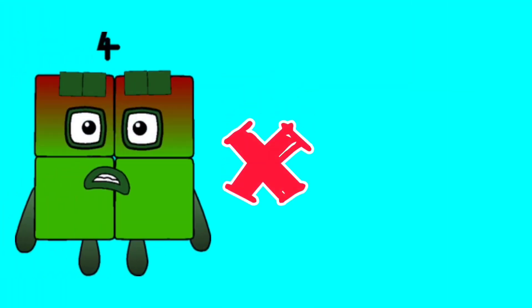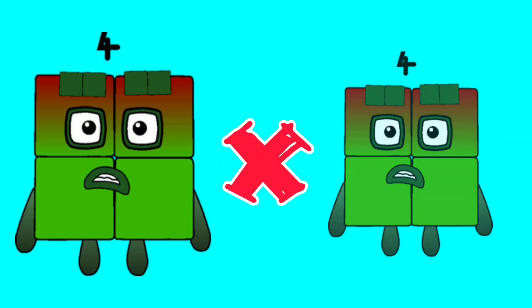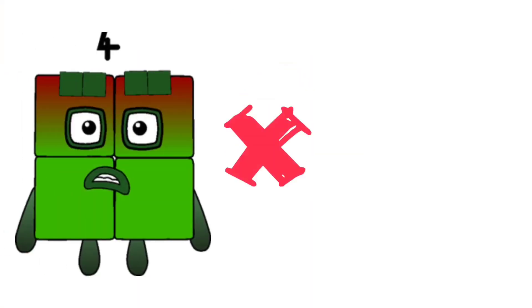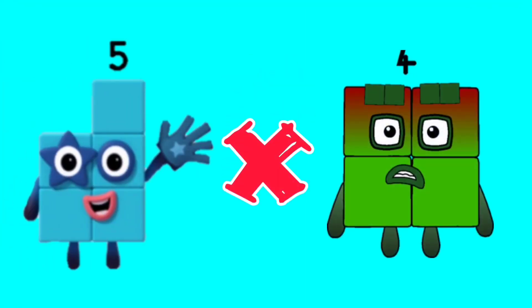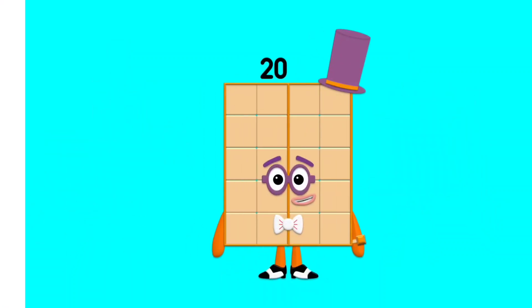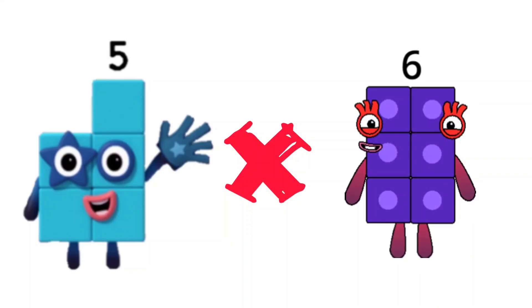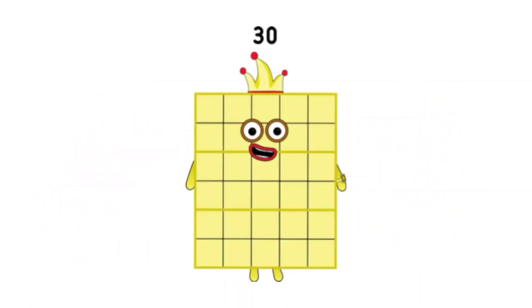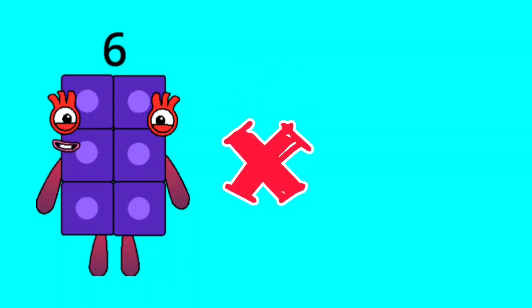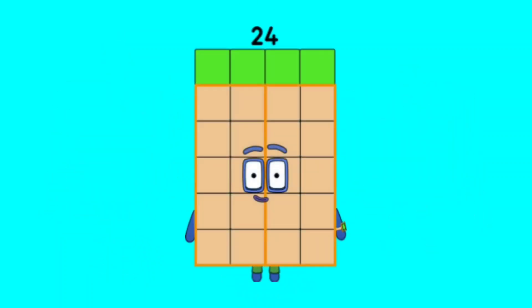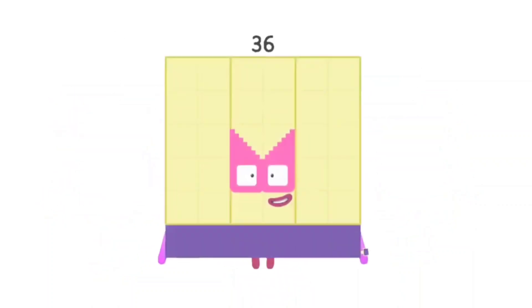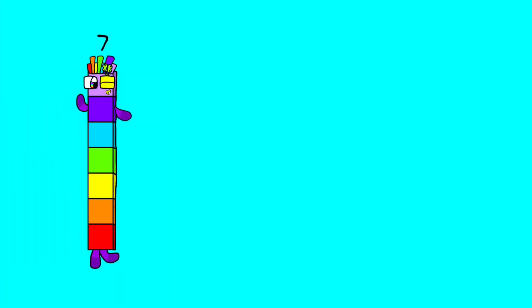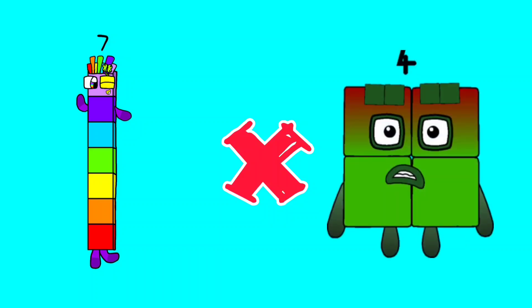4 times 4 is 16. 4 times 6 is 24. 5 times 4 is 20. 5 times 6 is 30. 6 times 4 is 24. 6 times 6 is 46. 7 times 4 is 28.